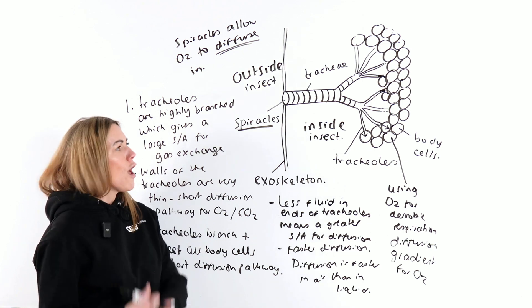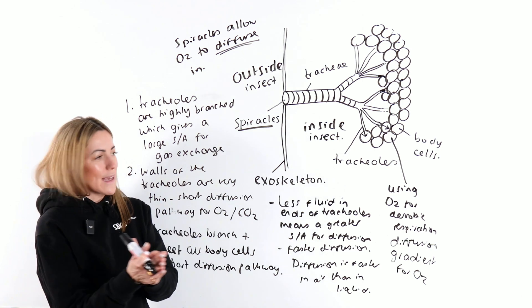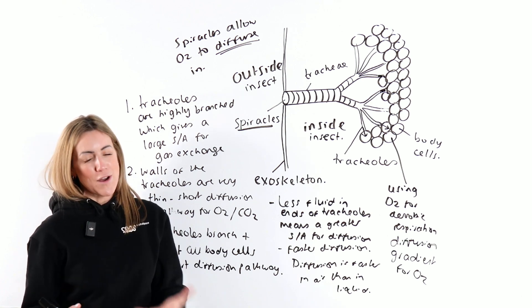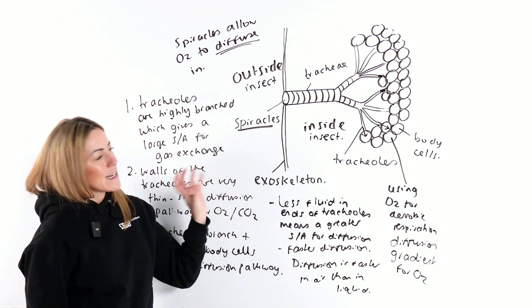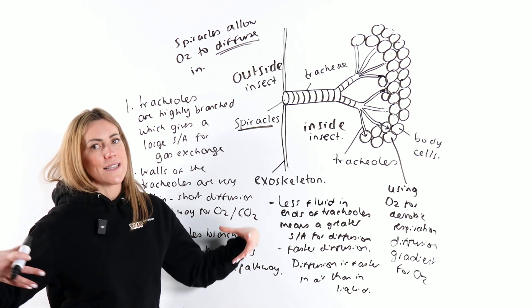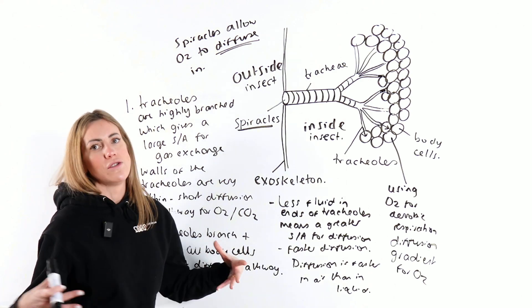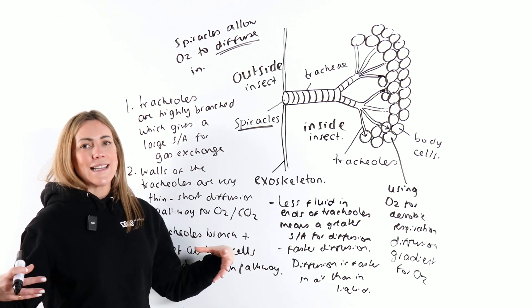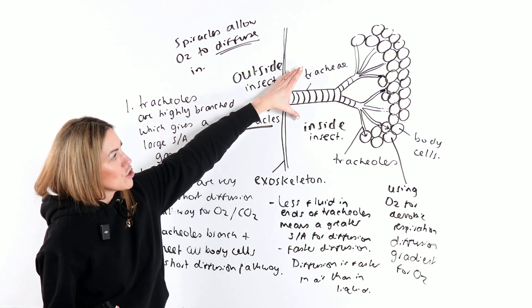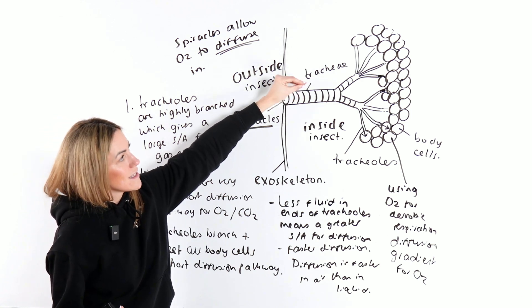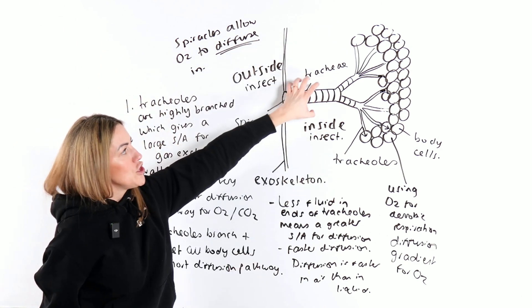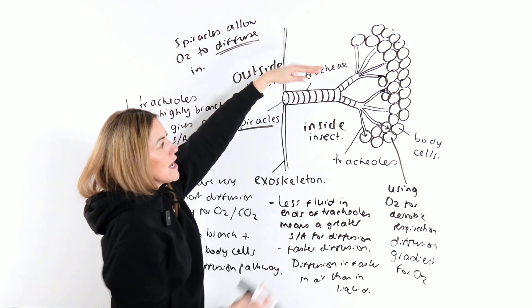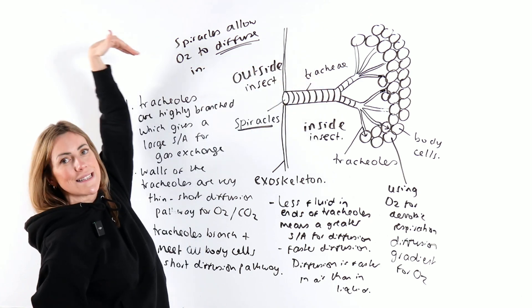What about abdominal pumping? Abdominal pumping could come up, although they'd probably give you some information on it. Basically, what insects can do is they can contract and relax muscles in their abdomen in a rhythmic motion. When they do that, it's called abdominal pumping. When the muscles contract, imagine muscles here contracting, it reduces the volume in the gas exchange system. Imagine it getting squished, which increases the pressure and forces air out.